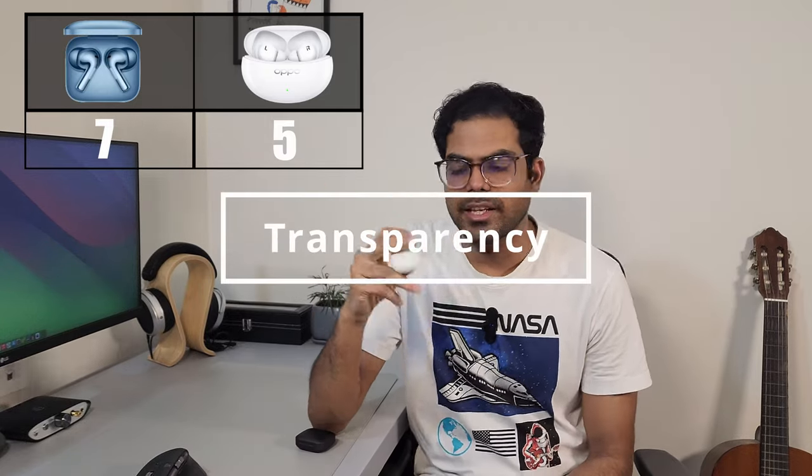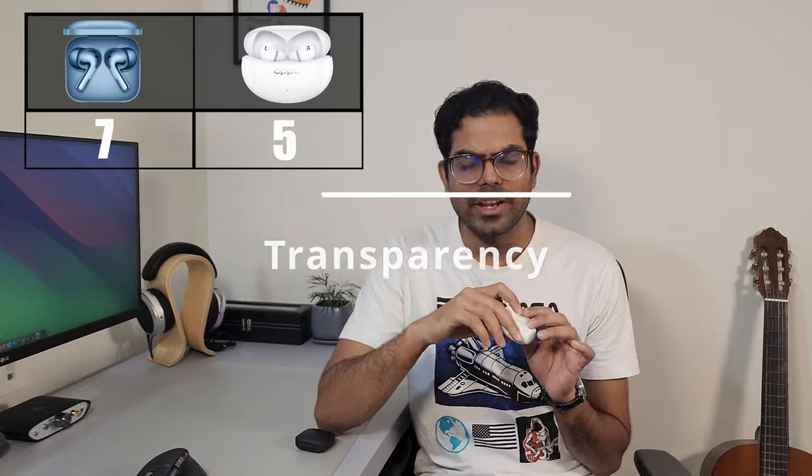Now let's talk about transparency. Both these sets have good transparency. In fact, I like the transparency more than ANC in both of these. In my experience, both were unable to produce that low frequency rumbles. However, rest of it was okay. While doing A-B testing among the both, I sensed that OnePlus sounded more natural amongst the two. So overall, you can easily talk to the person and perceive the surroundings around you without removing any of these buds out of your ears. So in transparency mode, I give OnePlus 1 point by a slight margin just because sounds a little bit more natural as compared to Oppo.